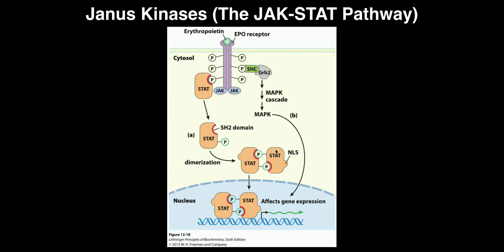The STATs have to dimerize in the cytosol. Over here, you see this little bump — this is only exposed when they dimerize. Notice in the monomer, that bump isn't present anywhere. But when they dimerize, this region is exposed — it's called the NLS, which stands for nuclear localization sequence. The NLS guides the protein into the nucleus through a series of regulated processes, because things aren't just free to go in and out of the nucleus. You need a nuclear localization sequence to get in.